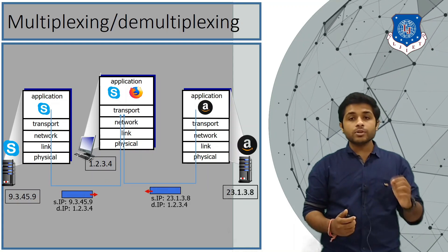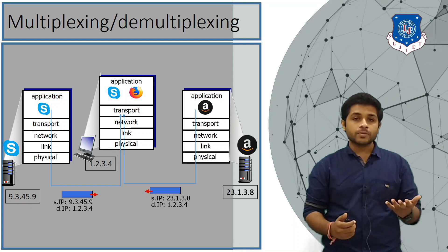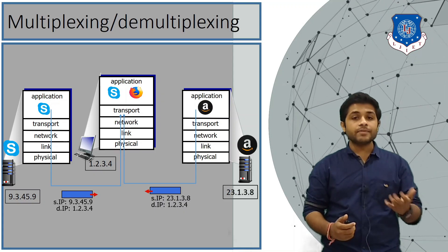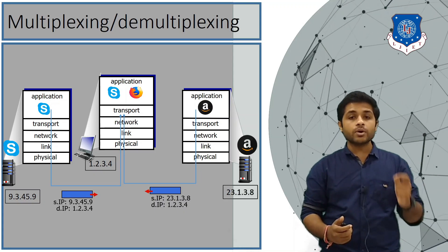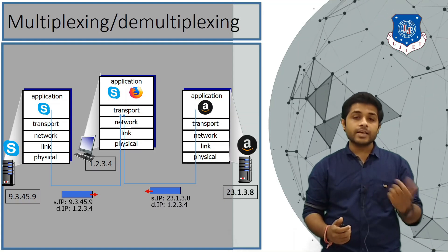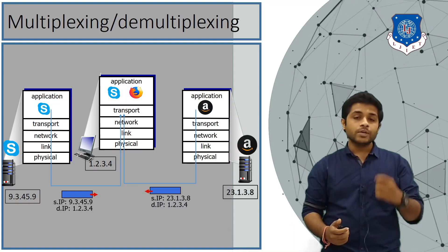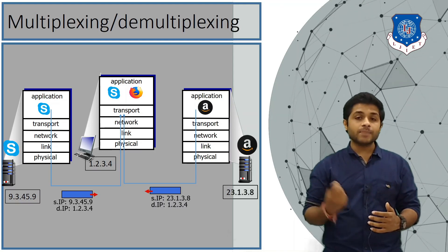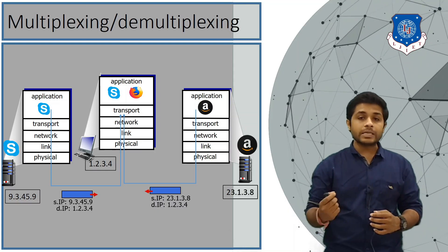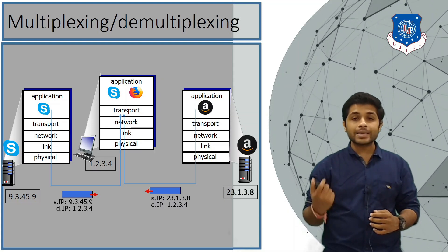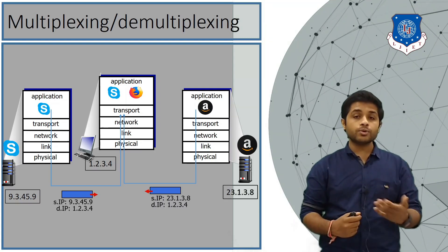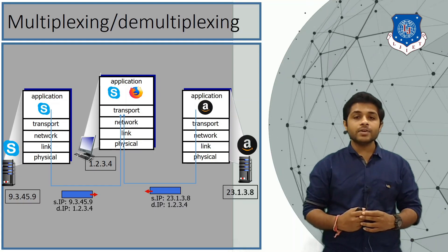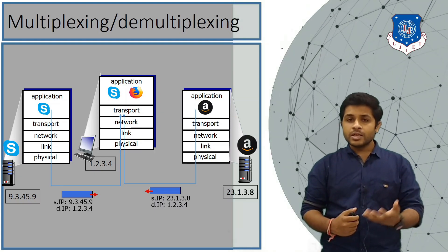Messages sent by your computer are received successfully by both servers, and both servers reply. The message from the Skype server has source IP 9.3.45.9 and destination IP 1.2.3.4. Amazon's reply has source IP 23.1.3.8 and destination IP 1.2.3.4. Both of these messages arrive at your device at the same time.